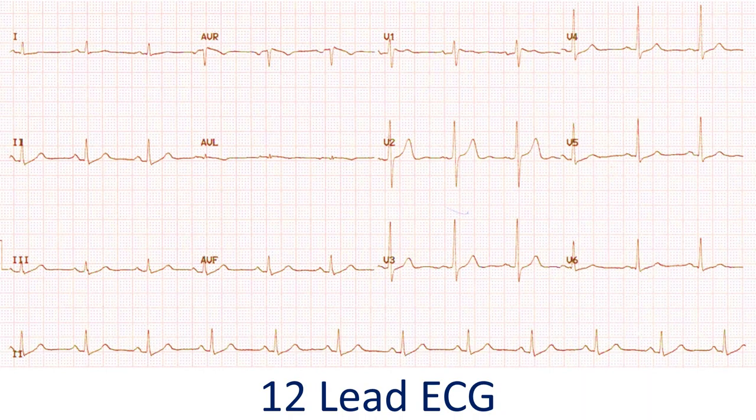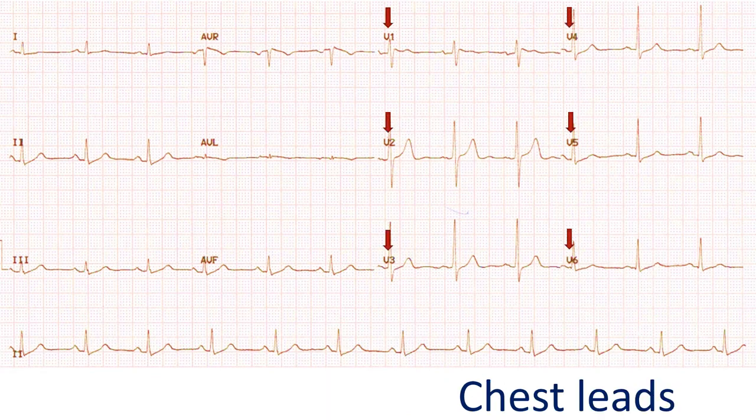Coming back to the 12-lead ECG shown initially, the different leads are obtained by various combinations of the surface electrodes. The connections can be switched inside the ECG machine. Leads called V1 to V6 are the recordings from the electrodes placed over the chest, recorded from specified regions of the chest.